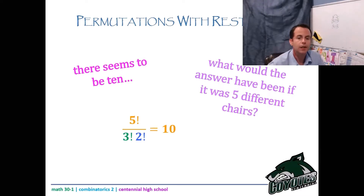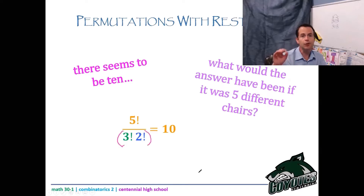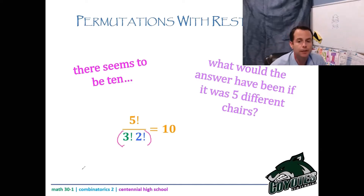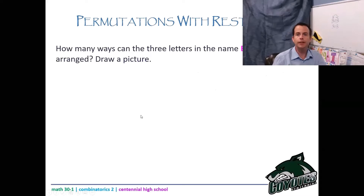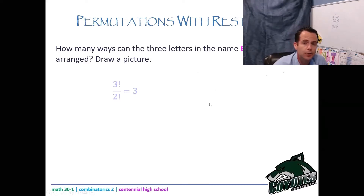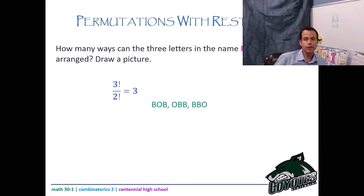If you have an older calculator, make sure the denominator is in its own set of brackets. If you have a newer Casio or TI, you can open the fraction button first. Now let's practice: How many ways can the three letters in the name Bob be uniquely arranged? If all different, that'd be 3 factorial. But we divide out the two Bs, so 3 factorial divided by 2 factorial equals 3. The three arrangements are Bob, OBB, and BBO.